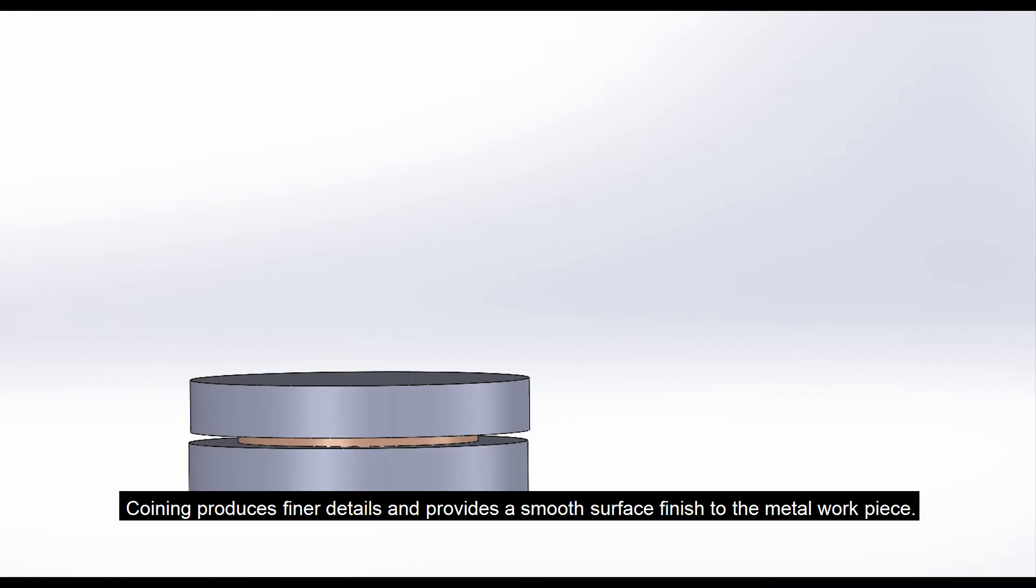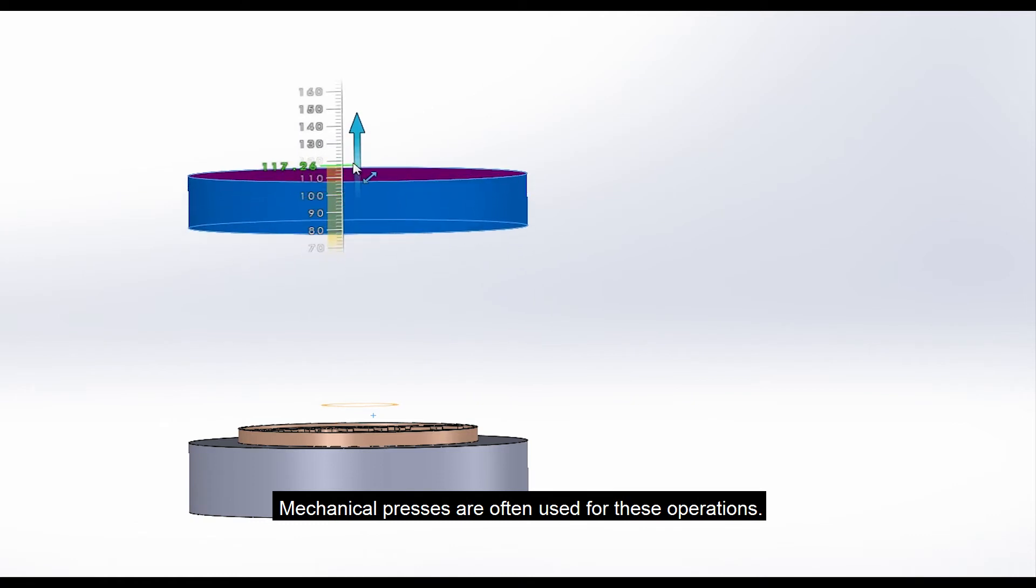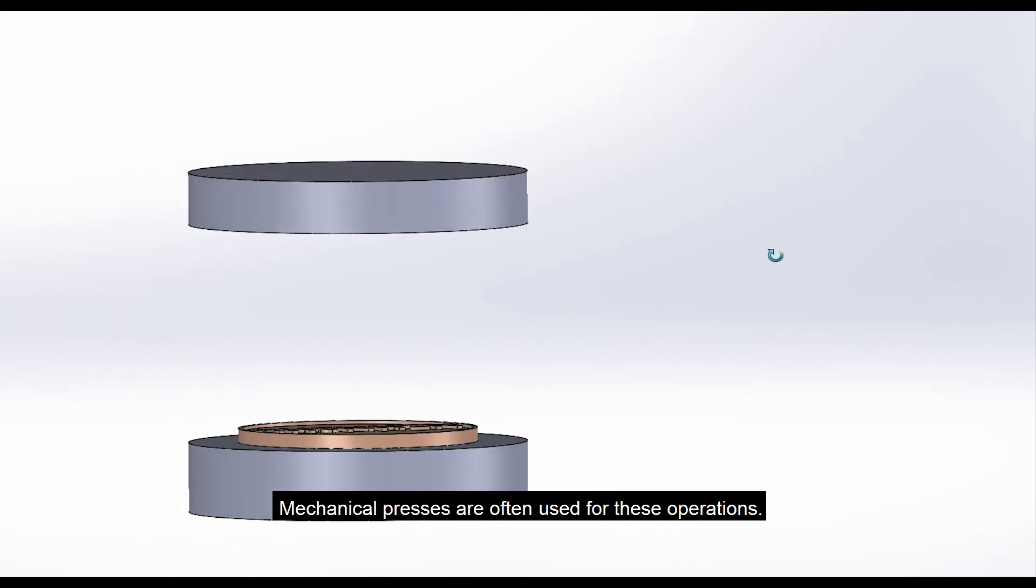Coining produces finer details and provides a smooth surface finish to the metal workpiece. Mechanical presses are often used for these operations.